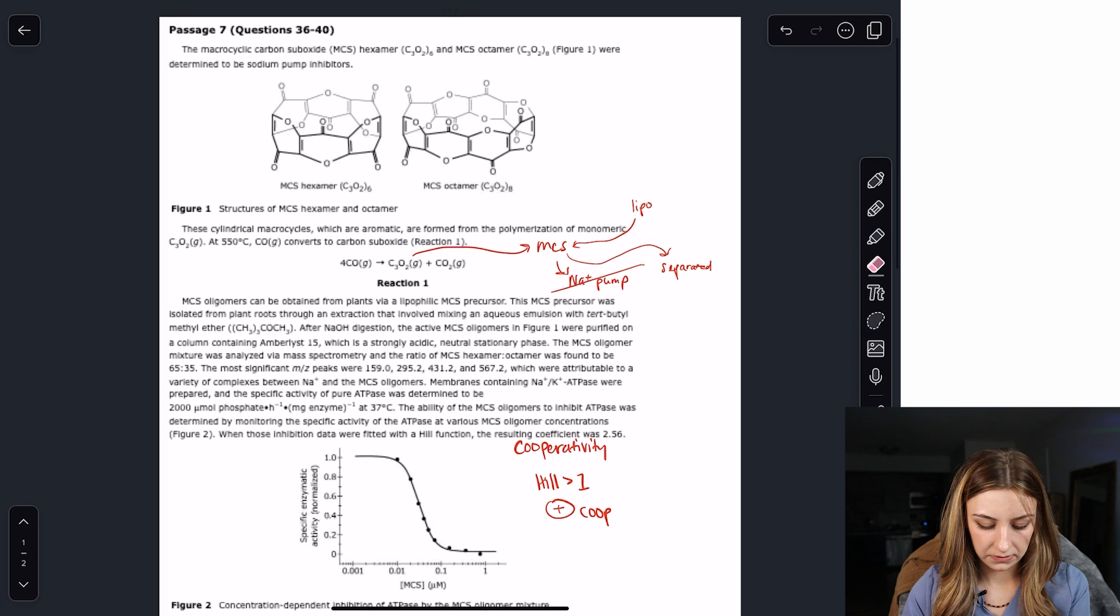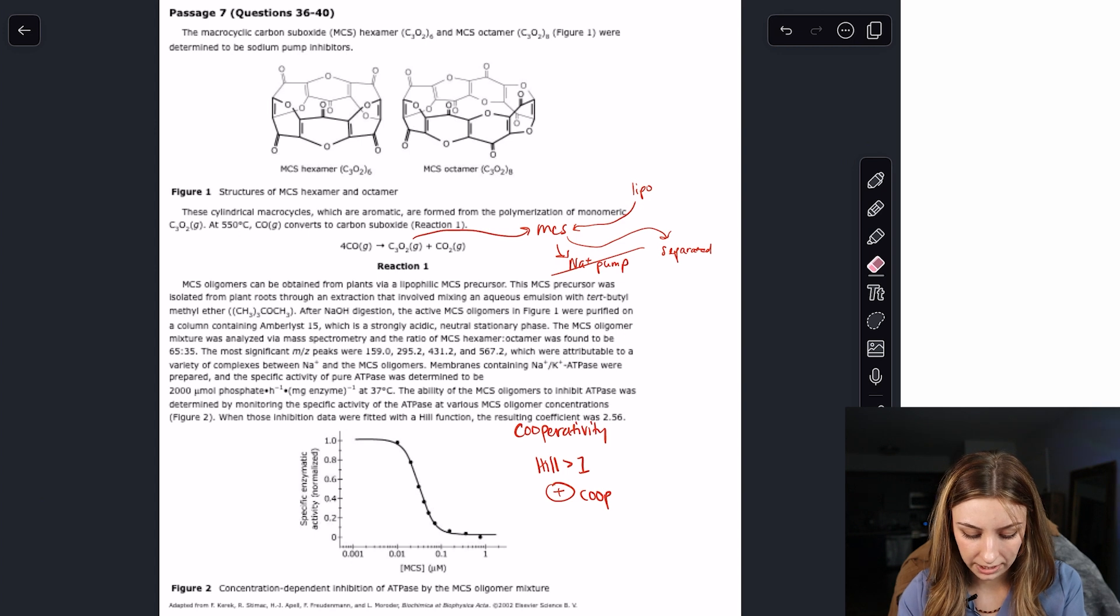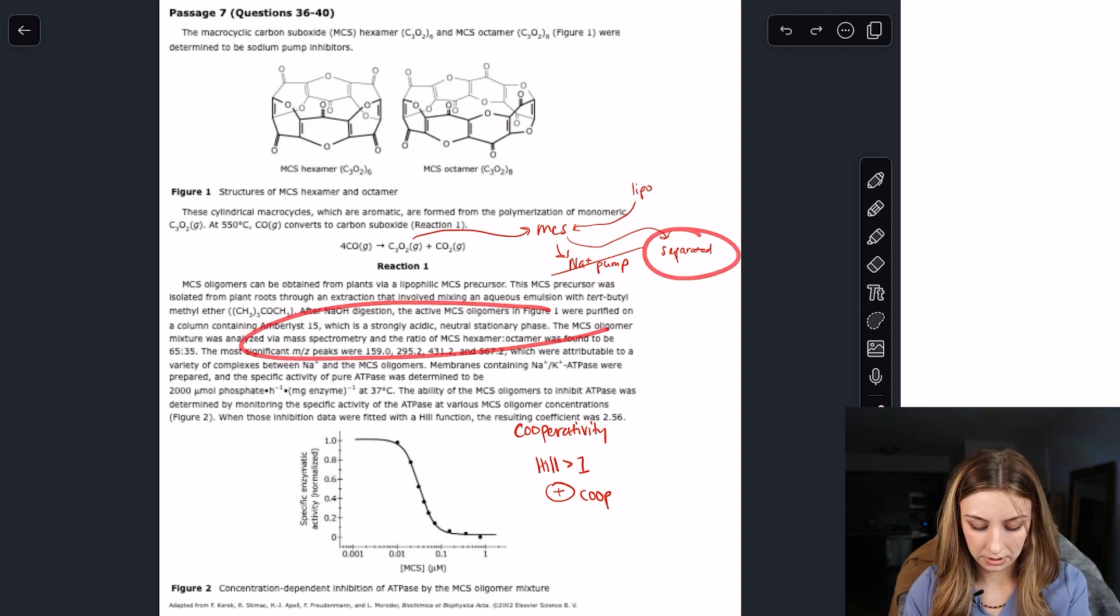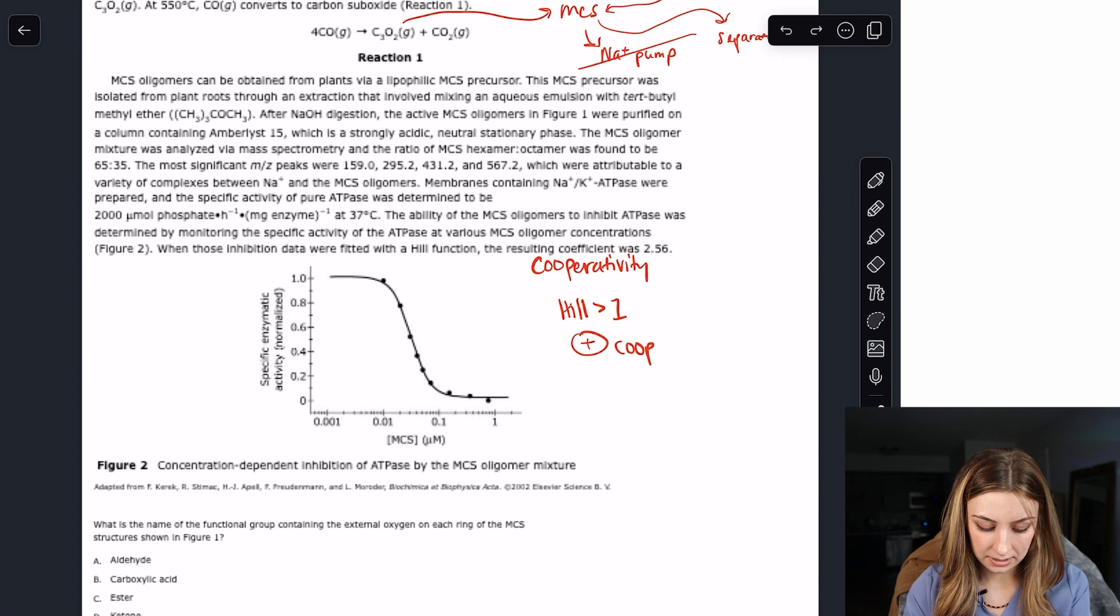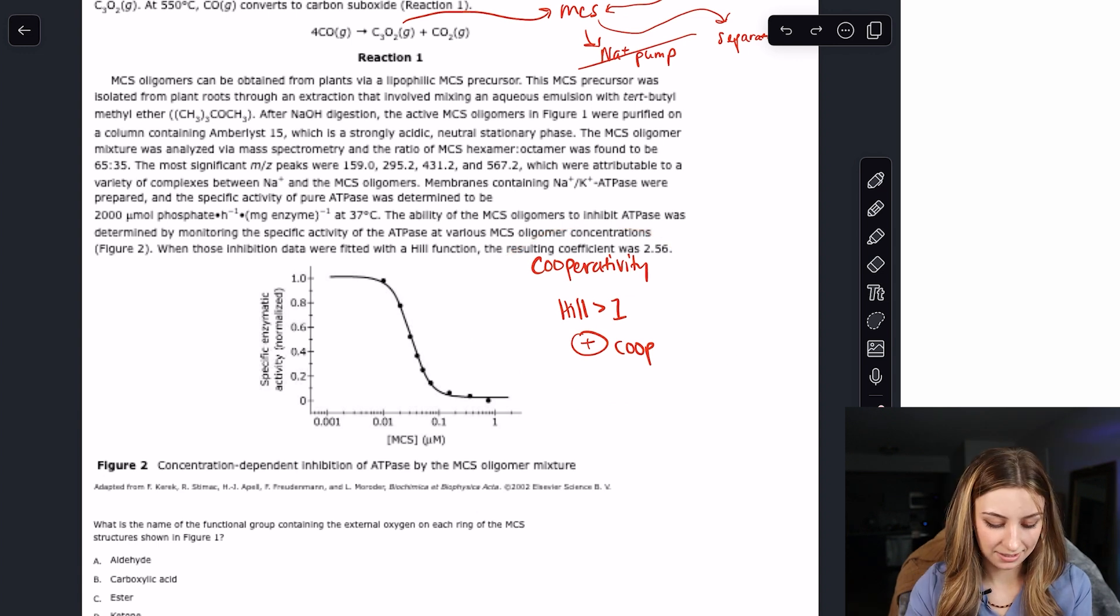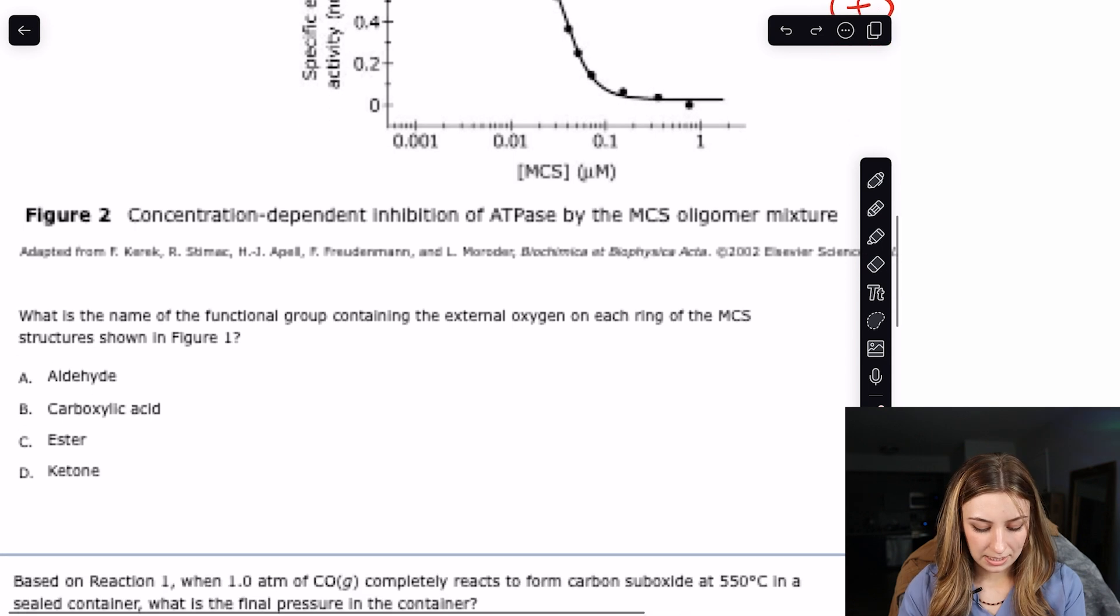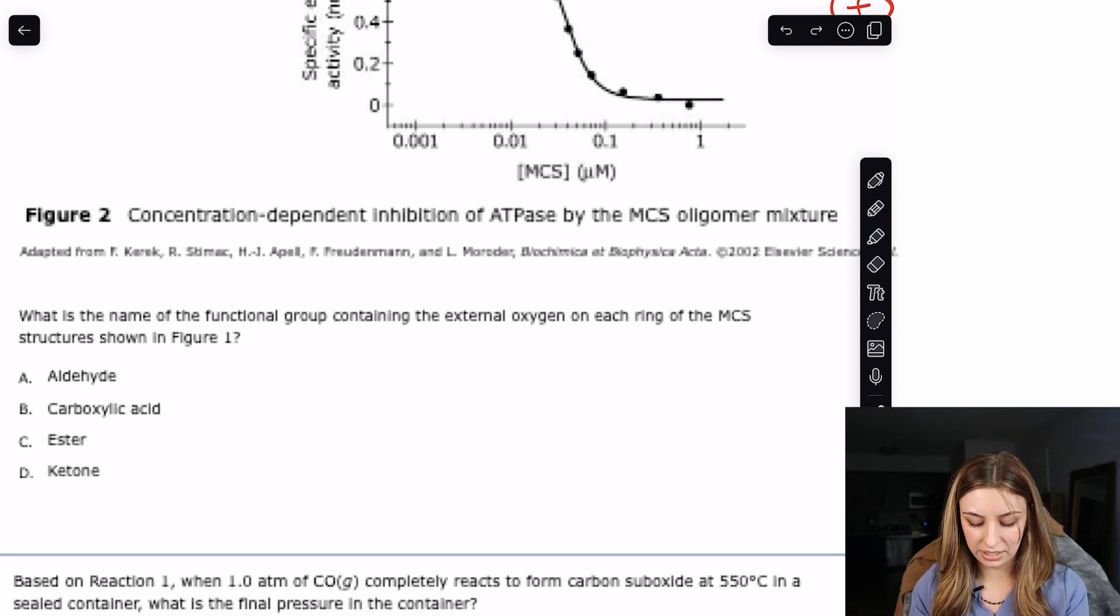So now this relatively boring, scary at the same time CP passage doesn't look so bad, right? We have this reaction that makes MCS, which is a sodium pump inhibitor. It comes from a lipophilic precursor. And we have to separate it out. And then it inhibits the ATPase, the sodium potassium pump with positive cooperativity. Not bad, right?